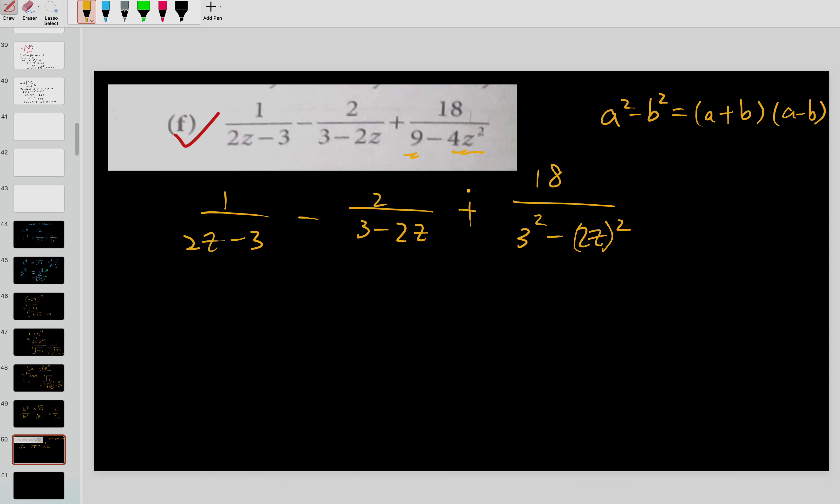Correct, a plus b times a minus b. Therefore I need to make the 9 into square and also need to make the 4z into square before I can use this formula. Can you use the above one if you have this?